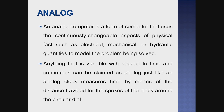Just like an analog clock measures time by means of the distance traveled by the spoke of the clock around the circular dial, an analog computer uses continuous variable values. For a 12-hour clock, the hour and minute hands move continuously with respect to time to display the current time.